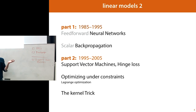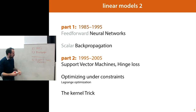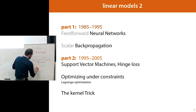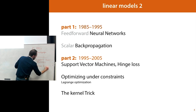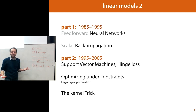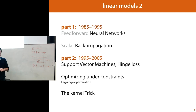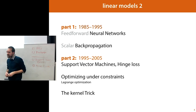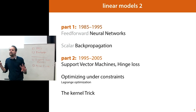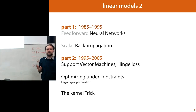Support vector machines are just a way of doing a linear classifier — like logistic regression and least-squares classifier — but one that supports the kernel trick, which allows you to apply those kernel functions. Today's lecture is a bit of a history lesson: from 1985 to 1995, neural networks were the most popular way of doing machine learning, and you saw systems like the Alvinn self-driving car.